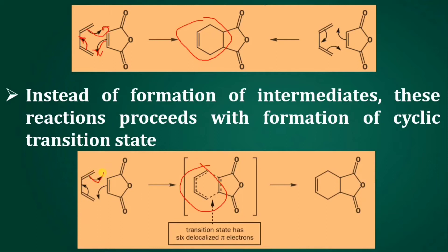Instead of intermediates, a cyclic transition state forms. When this bond shifts here, this bond shifts here, and this bond shifts here — such a cyclic shift of electrons takes place, forming a cyclic transition state shown by a dotted line, and finally a product is obtained. So pericyclic reactions proceed with the formation of a cyclic transition state instead of an intermediate.